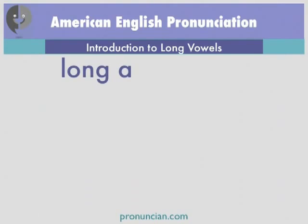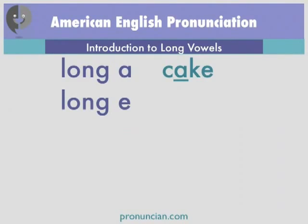The long A sounds like A. It is the vowel sound in the word cake — K, A, K — cake. The long E sounds like E, and is the vowel sound in the word keep — K, E, K — keep.